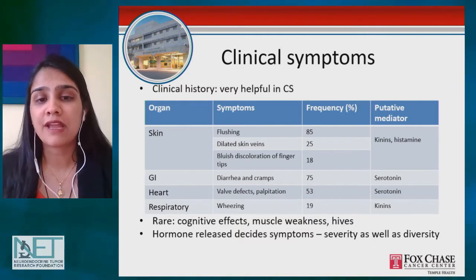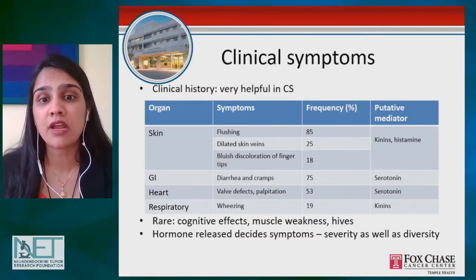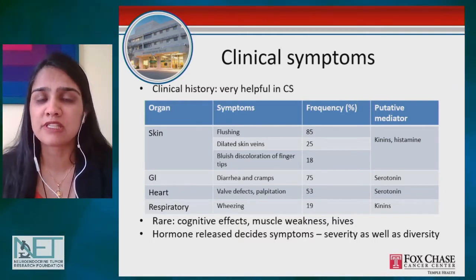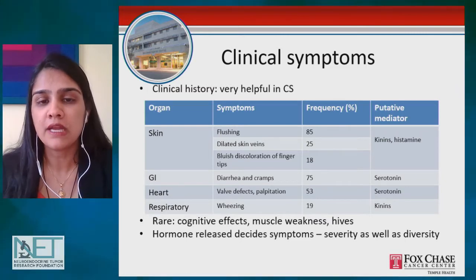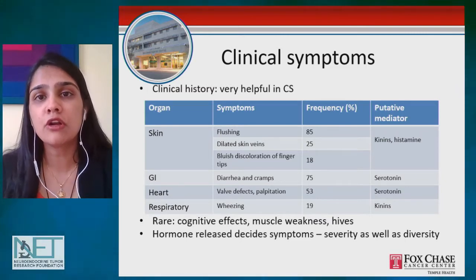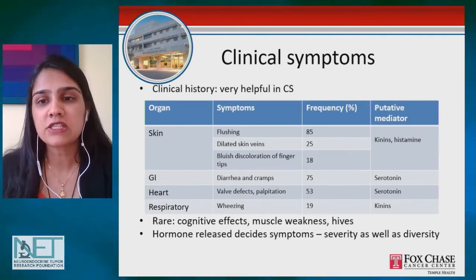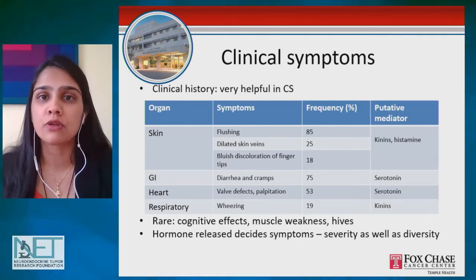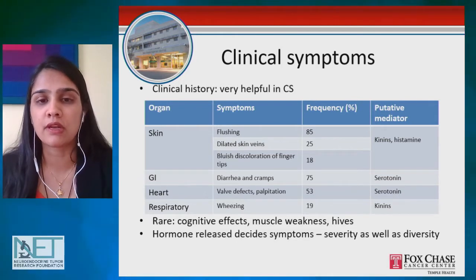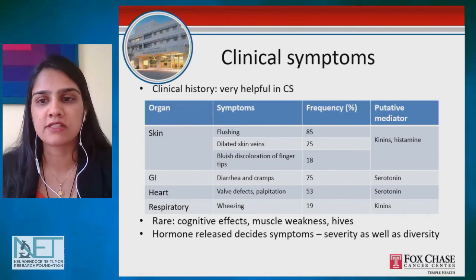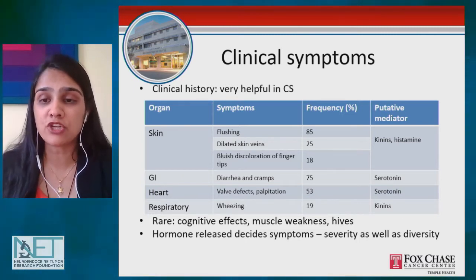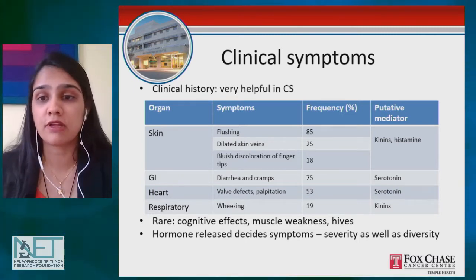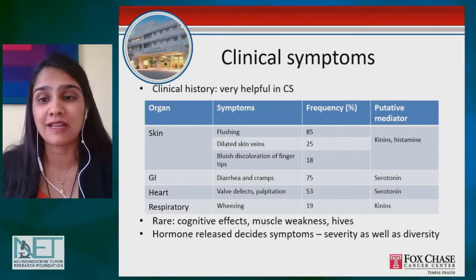Looking at the GI system, diarrhea and cramping is the second most common symptom associated with this syndrome, and it is particularly mediated by the serotonin hormone. Some tumors produce serotonin, and others produce kinins more than serotonin, and that decides what symptoms a patient with carcinoid syndrome has. So some patients have flushing but no diarrhea, others have diarrhea but no flushing, and some have both.